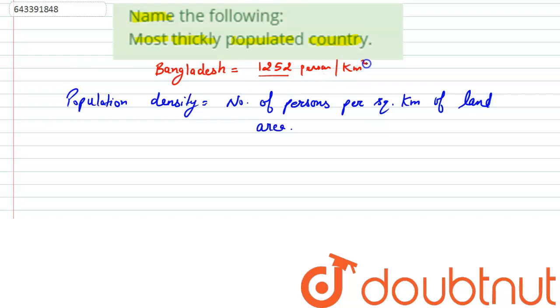So Bangladesh is the most thickly populated country. Thank you.